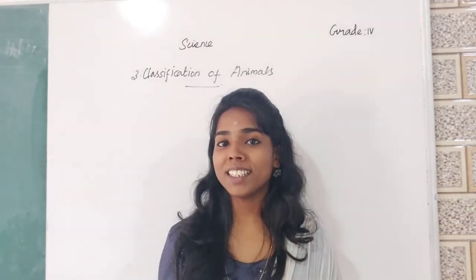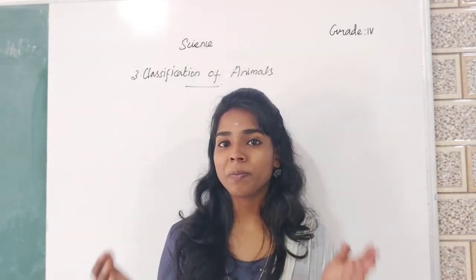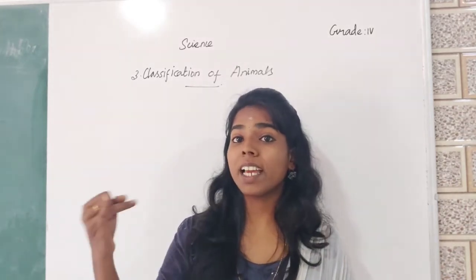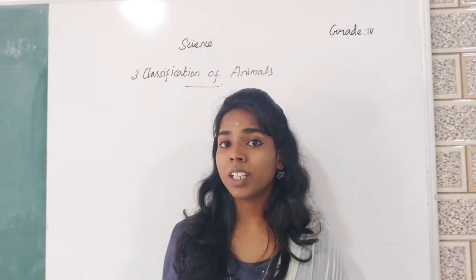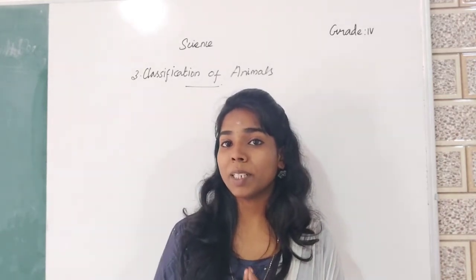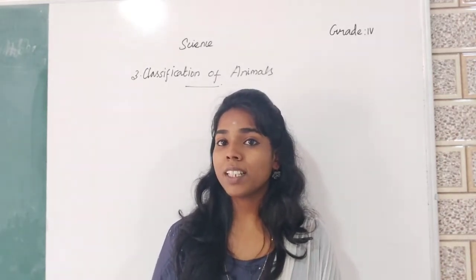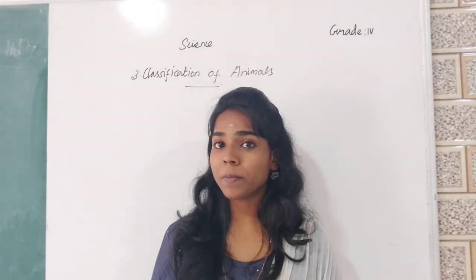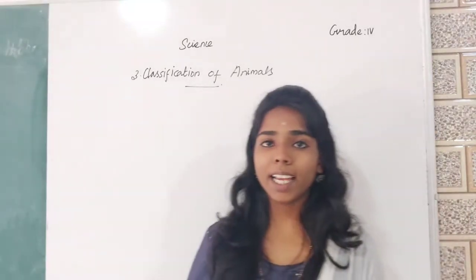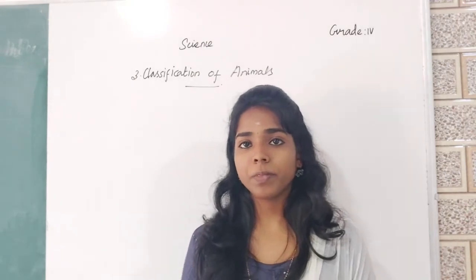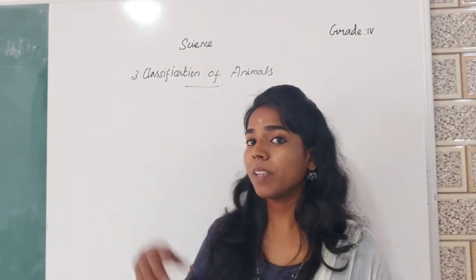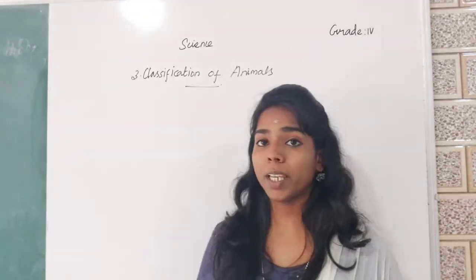In the last class, what we learnt is we learnt about the features of birds and mammals. Students, we have completed chapter number 3. What is the title of chapter number 3? It is Classification of Animals. In today's class, we are going to revise the concepts that we have learnt in this chapter.